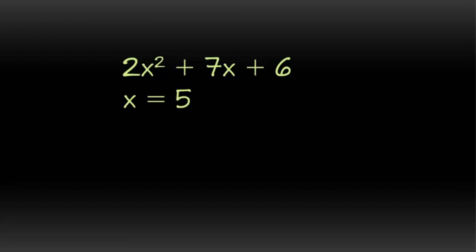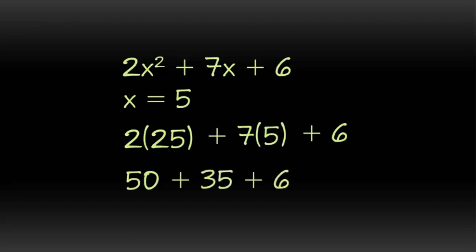So how did you do? When you're evaluating expressions, it's very important that you pay attention to the order of operations. So I've plugged the 5 in. I need to make sure that I do my exponent first before I do my multiplication. So I'm going to multiply 5 squared, and I get 2 times 25 plus 7 times 5 plus 6, which gives me 50 plus 35 plus 6 for a total of 91.